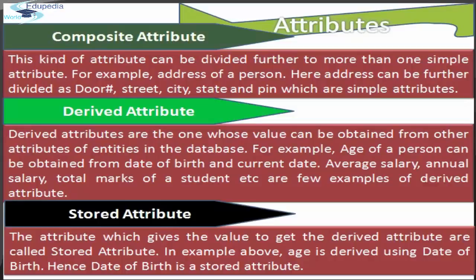Next is the derived attribute. Derived attributes are those whose values can be obtained from other attributes of entities within the database. For example, the age of a person can be obtained from the date of birth and the current date. Average salary, annual salary, and total marks of a student are a few more examples of derived attributes.